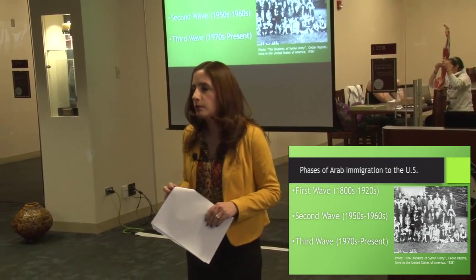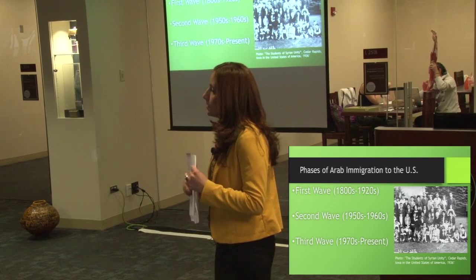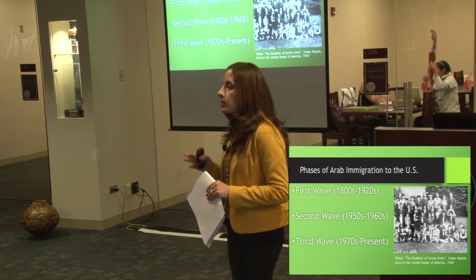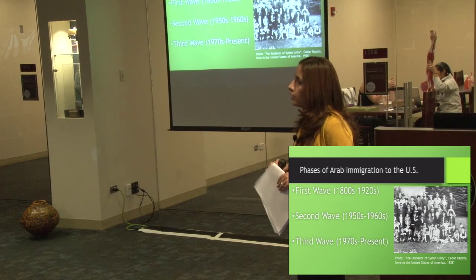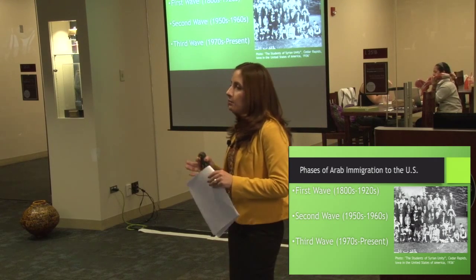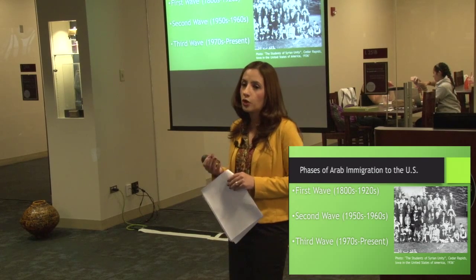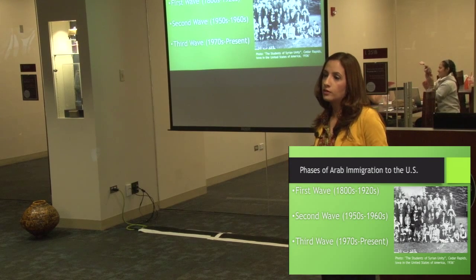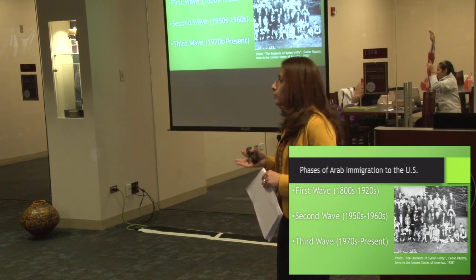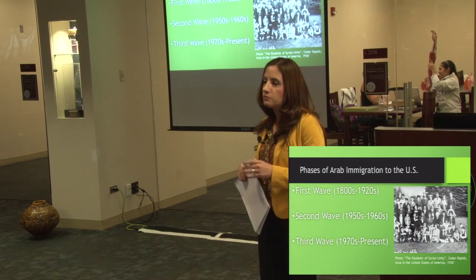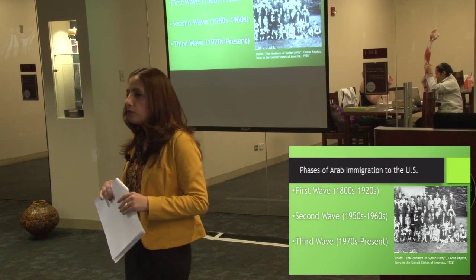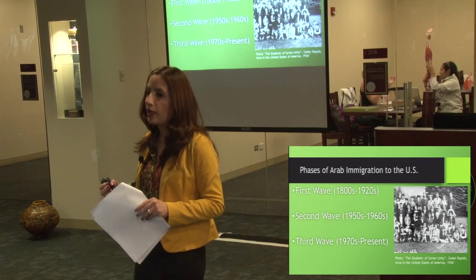Let's talk about the phases of Arab American immigration. Some historians have documented that some of the first Arabs actually came as slaves from North Africa. However, in the late 1800s and early 1900s is what historians consider the first wave: the majority were Christian from Greater Syria — modern-day Syria and Lebanon — who came for better opportunities, not knowing if they would stay. They integrated and were the ones who fought to be white. The second wave came around the 1950s and 1960s during the post-World War II era, when the brain drain was happening. Foreign professionals, often highly educated, came and were welcomed, and many of them stayed.